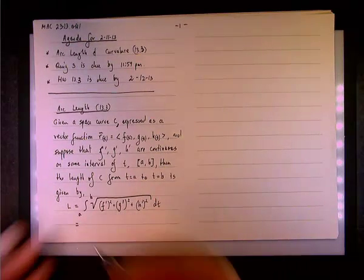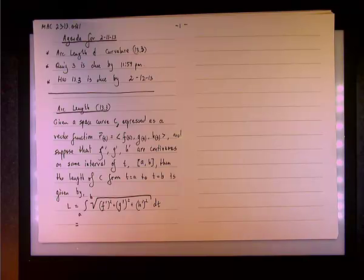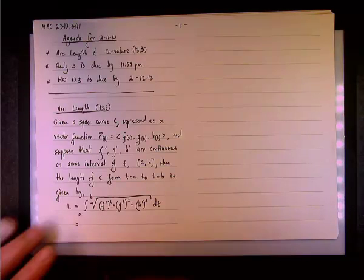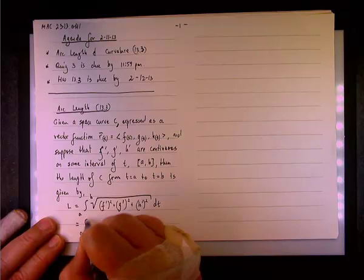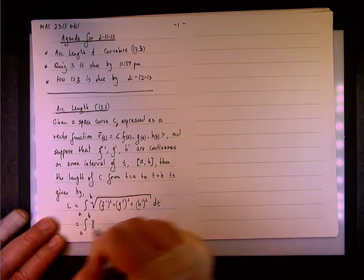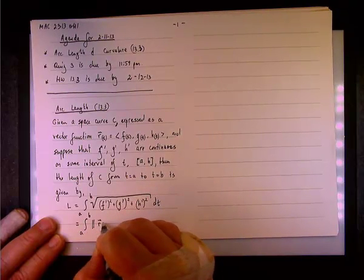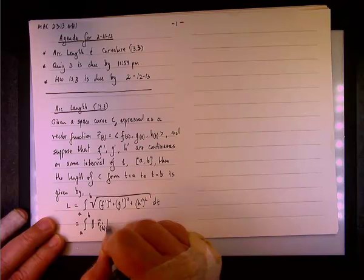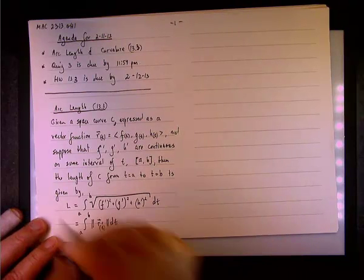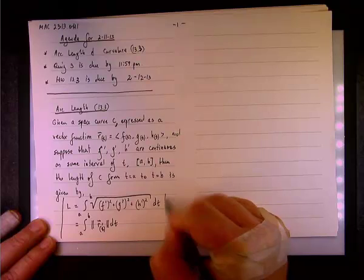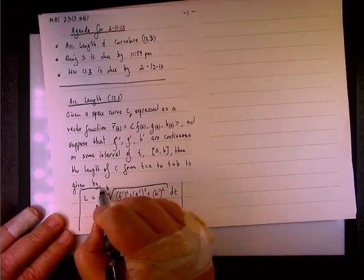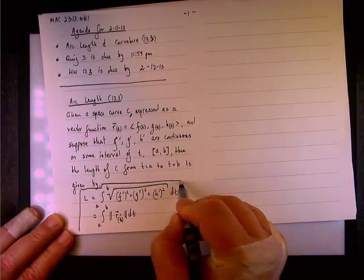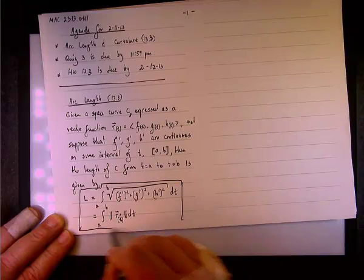but since the integral, the square, the radical itself is the magnitude of the derivative vector function then we can write it as the integral from A to B of the magnitude of the vector function like so